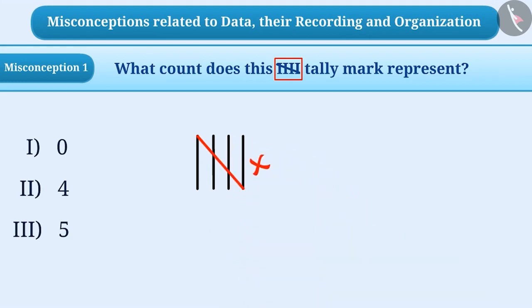That is, these tally marks are not to be counted. Hence, they don't count this tally mark and select the first option, which is the wrong answer.